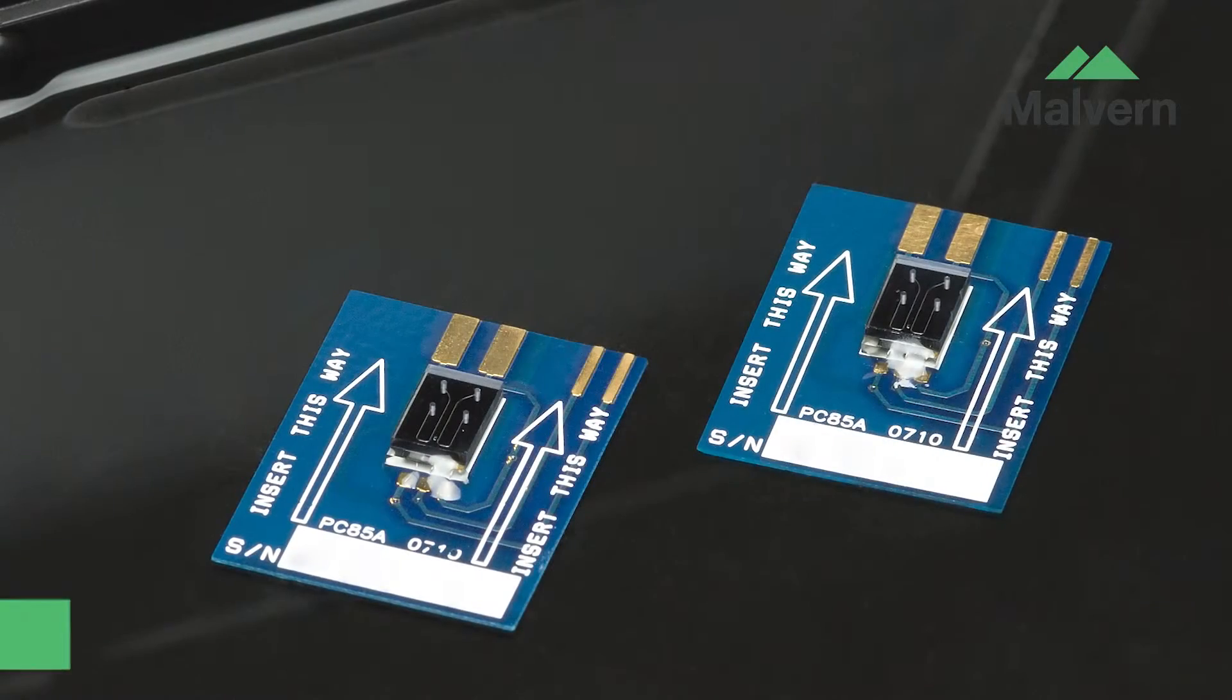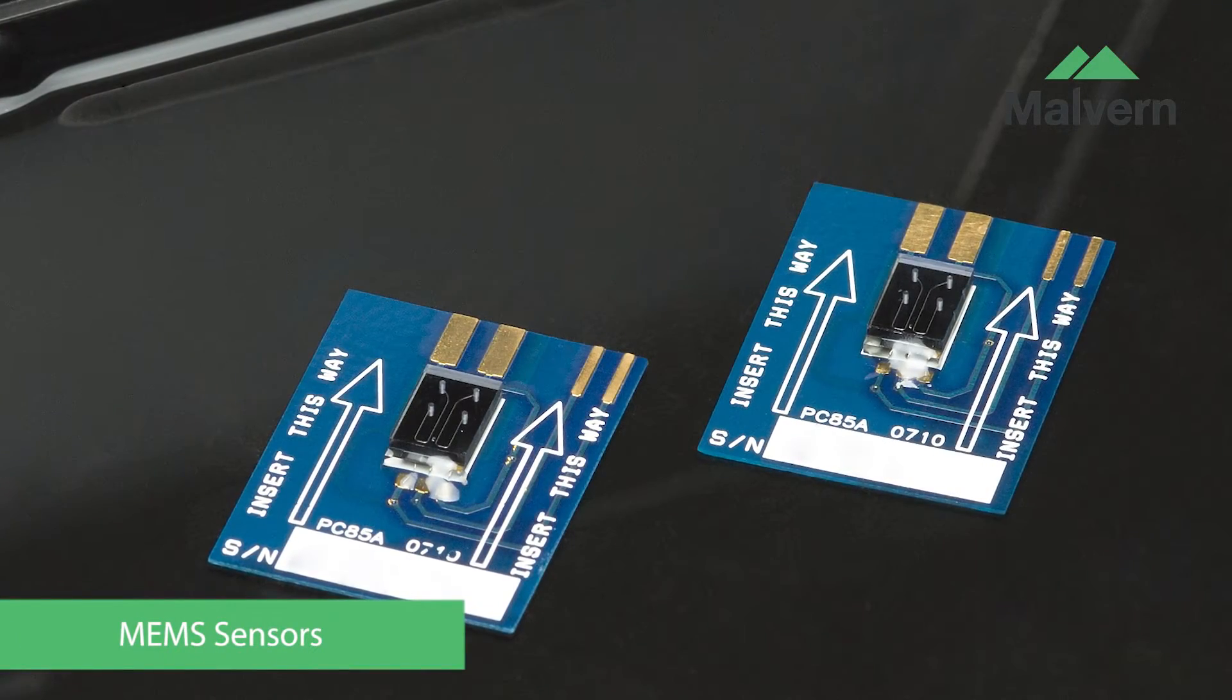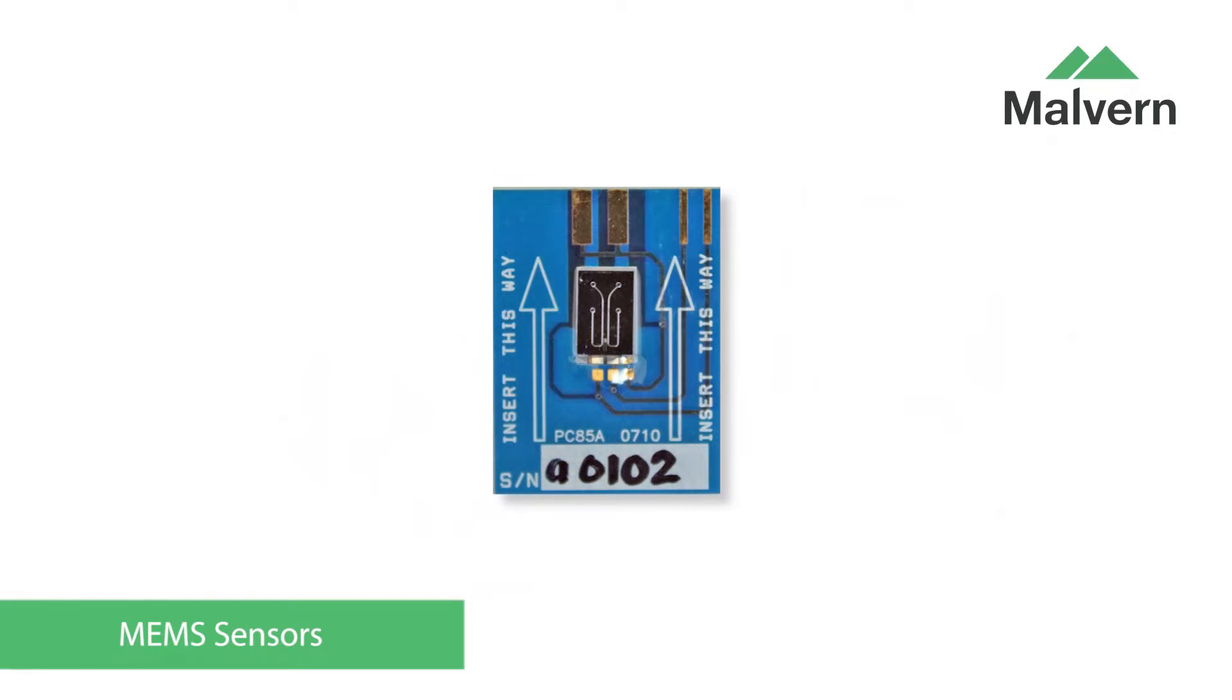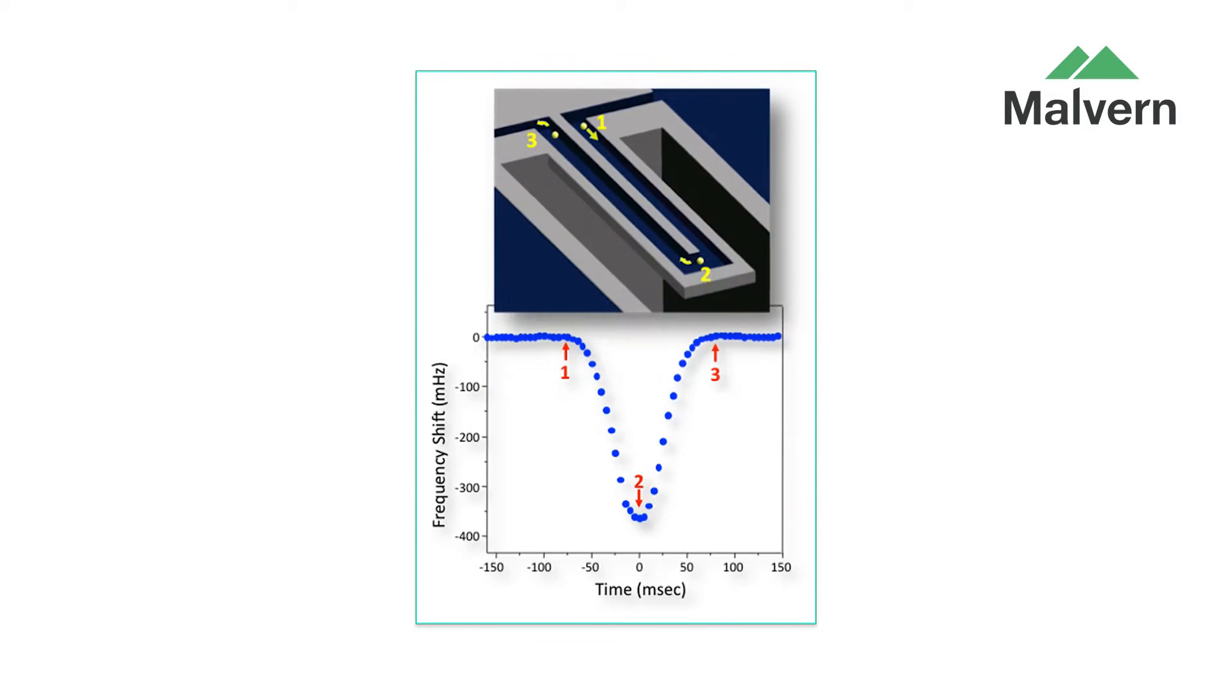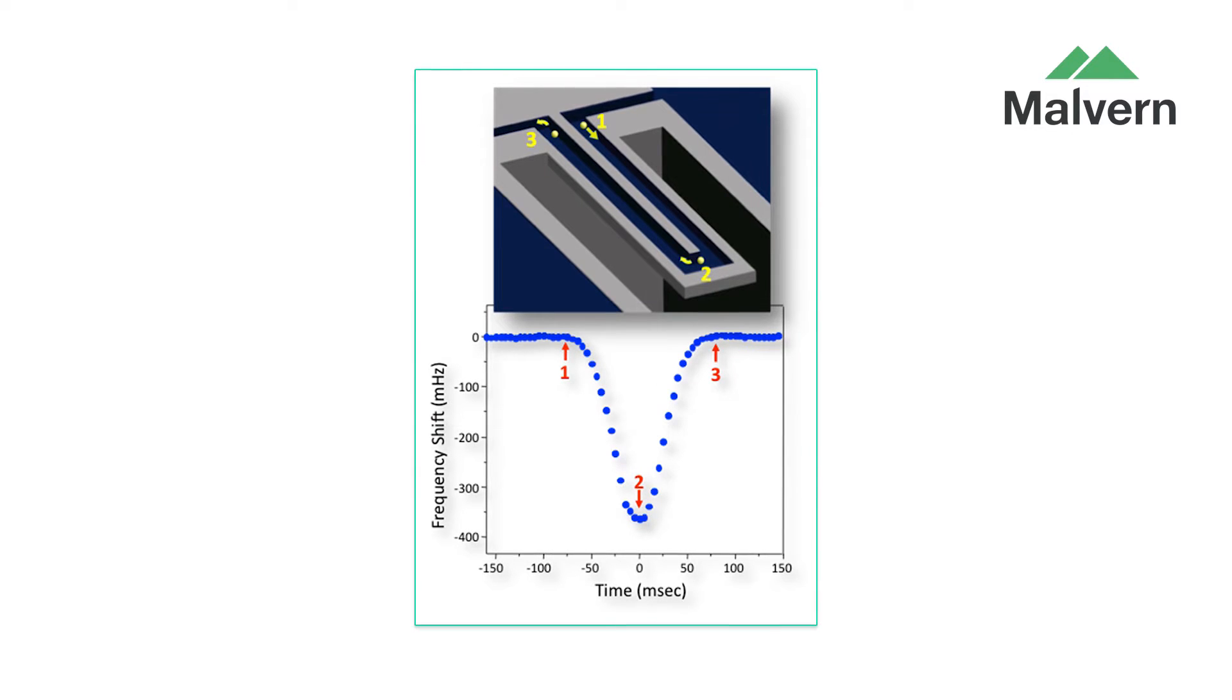The system uses MEMS sensors to allow a micro flow of sample through the instrument. At the heart of the sensor is a resonating cantilever device that can both count and precisely measure aggregates of various sizes and masses as they pass through.